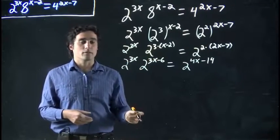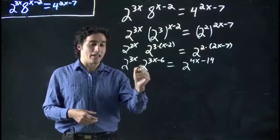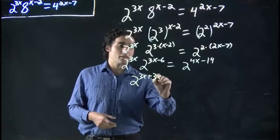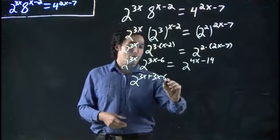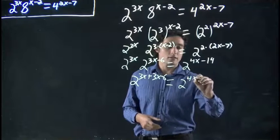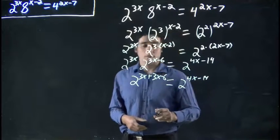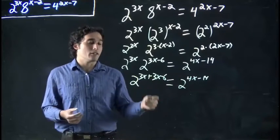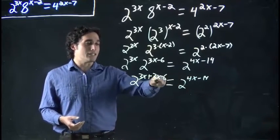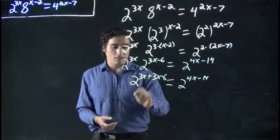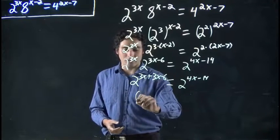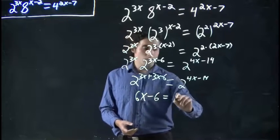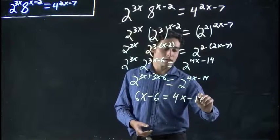And now that we have the same base on both sides, we can set these exponents equal. They must be equal. If the base is the same, this must be equal to 2 to the 4x minus 14. So I'm going to combine these. This is 3x plus 3x. This gives us 6x minus 6 equals 4x minus 14.